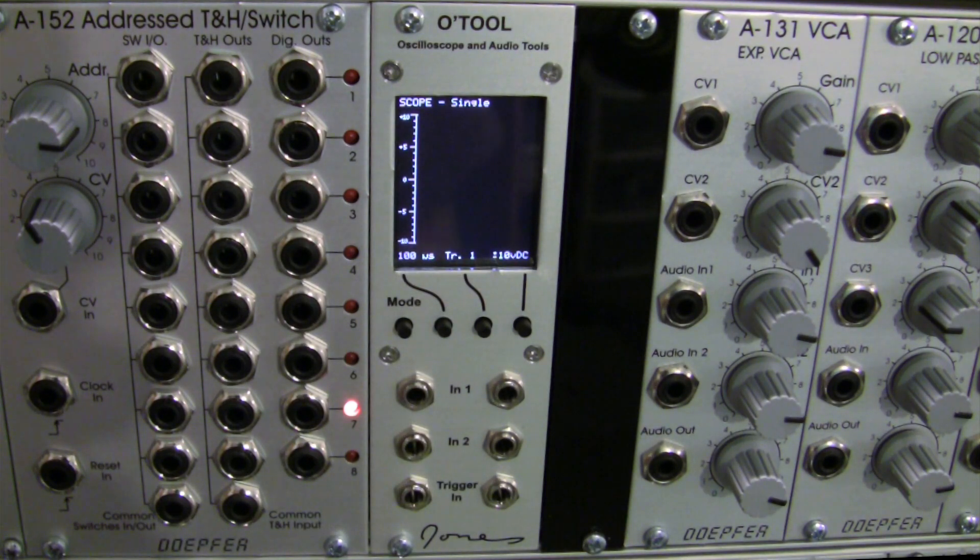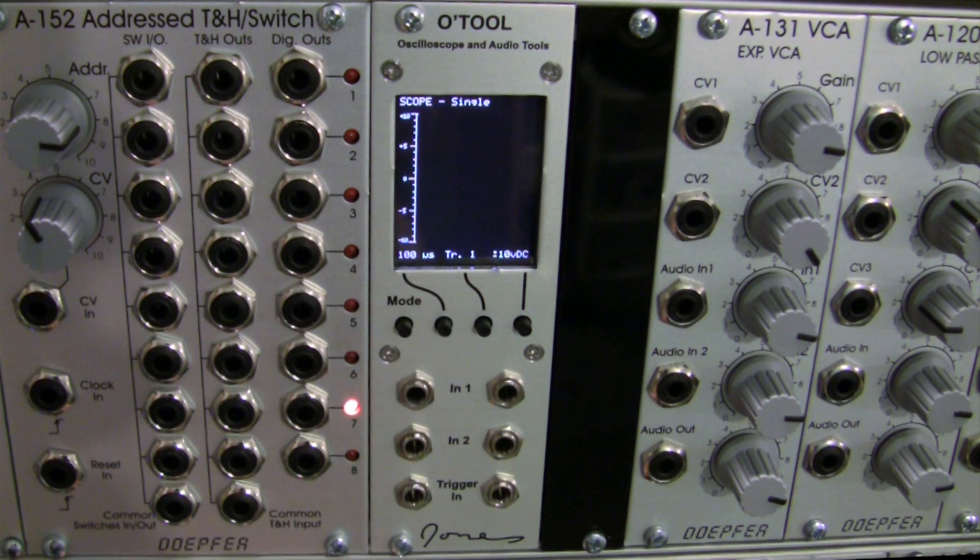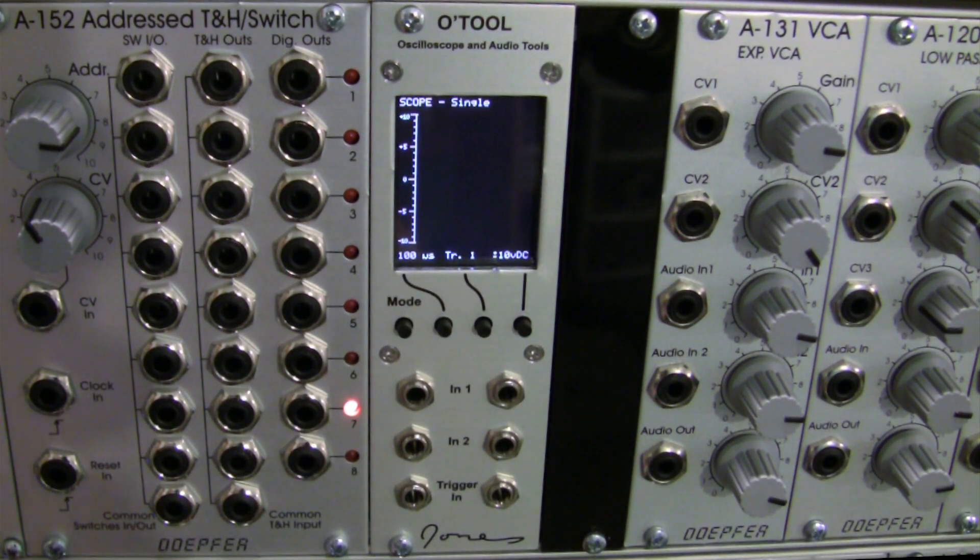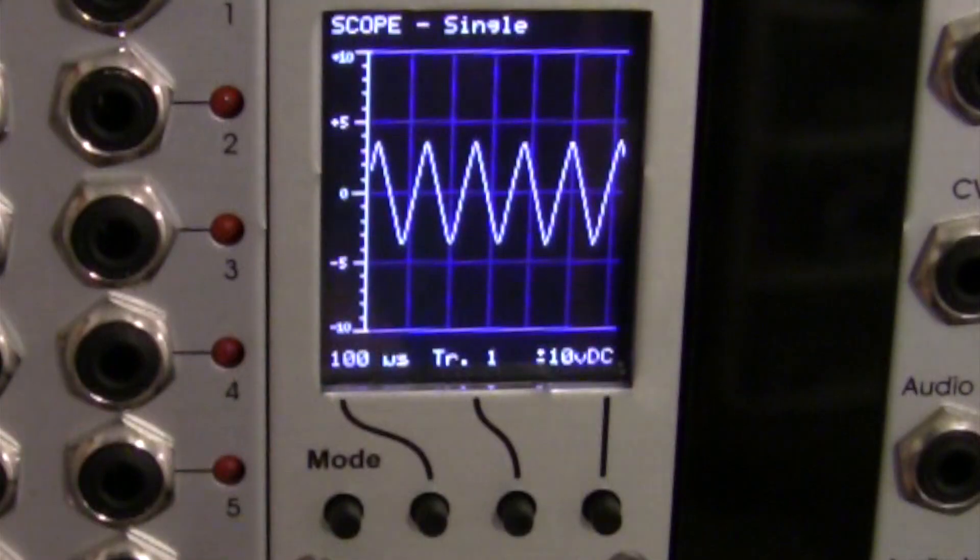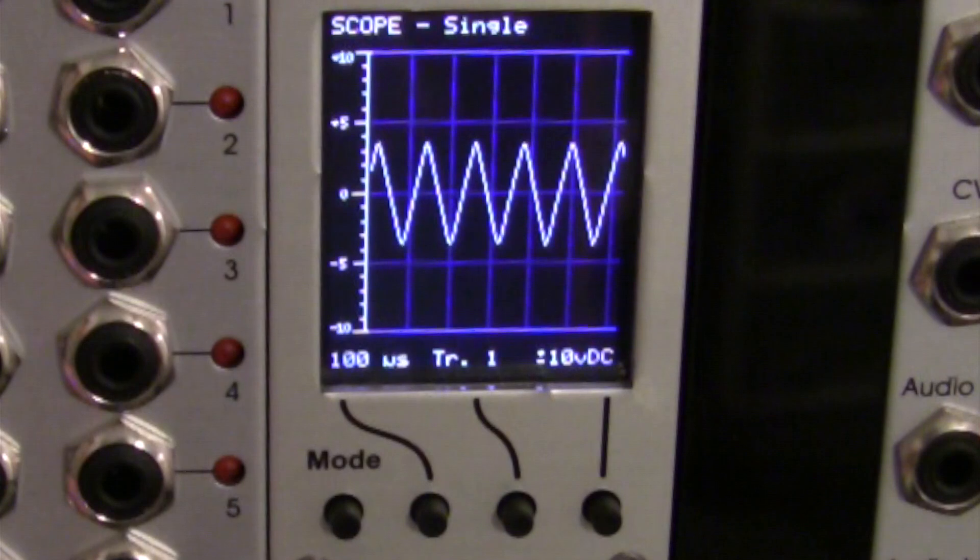So let's jump right in to one of the first modes that you'll see when you first turn on your O-Tool, and that is the single scope oscilloscope. We're going to take a triangle out from our audio frequency generator down here. We're going to pipe it into input one. There we are, and there is our triangle wave.